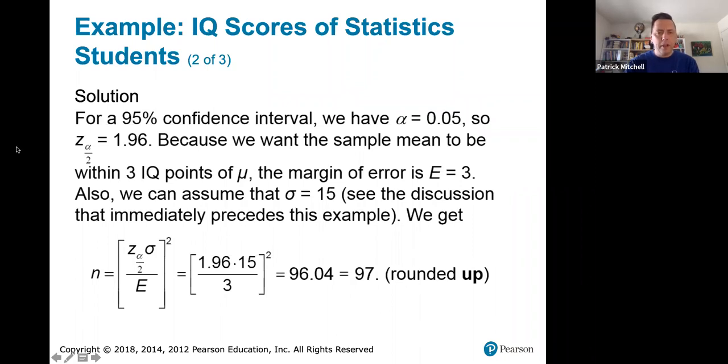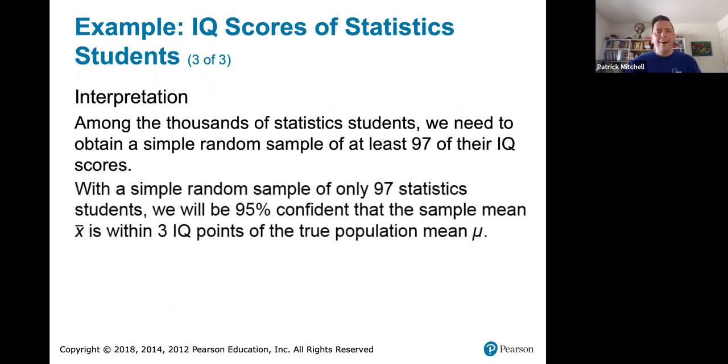So here's what we get. Here's your formula. You fill in 1.96 for z sub alpha over 2, fill in 15 for sigma, fill in 3 for E. That comes out to 96.04, which despite being so close to 96, we're going to round that up to 97. Because this 96.04 means a minimum of 96.04 students. 96 students would not meet that minimum. It comes very, very close, but not quite. So to be extra safe, always round that number up. So among the thousands of statistics students, we need to obtain a simple random sample of at least 97 of them in order to estimate the population mean IQ score to within three points.